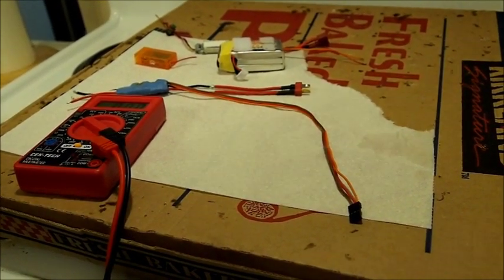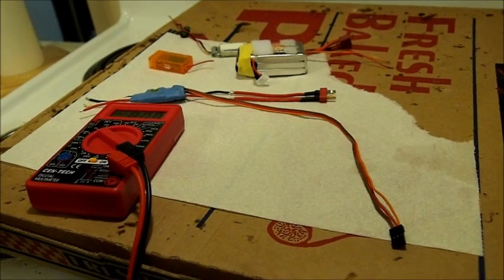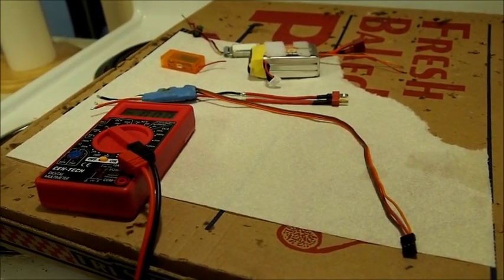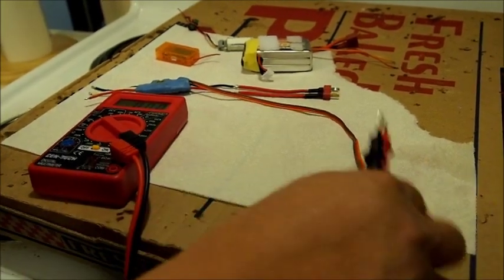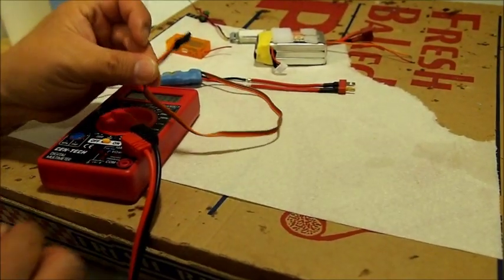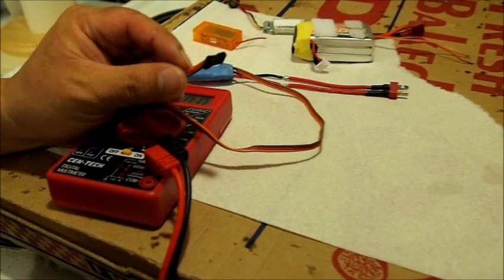A UBEC is very useful if you've got a bigger plane and you want a little bit of insurance just in case your ESC burns out. First thing you want to do is take the RX wire coming from your ESC.